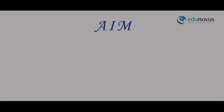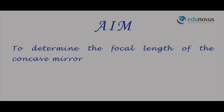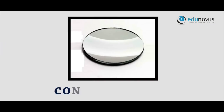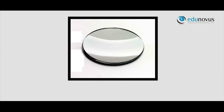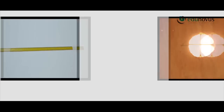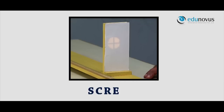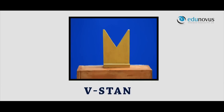Hope you got a clear picture about the terminology associated with the concave mirror. Now let us go through the aim and apparatus required to perform this experiment. Aim: to determine the focal length of a concave mirror by the distant object method and UV method. Apparatus: concave mirror, meter scale, illuminated cross wires, screen, and a V-stand.